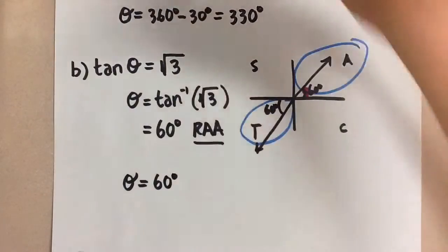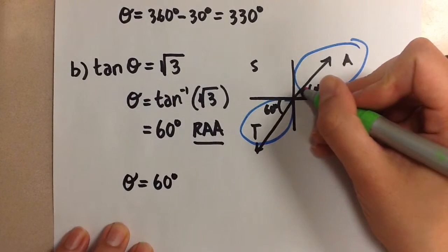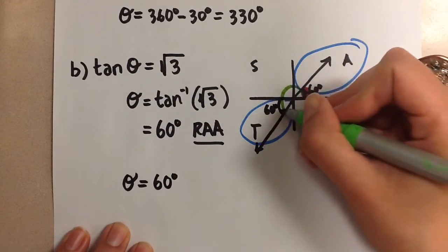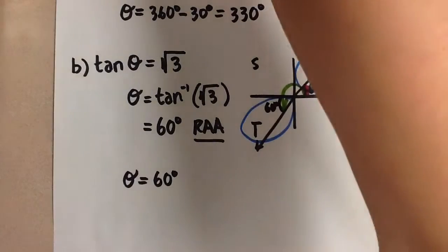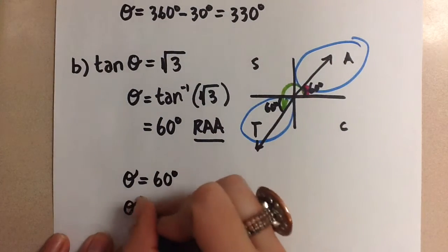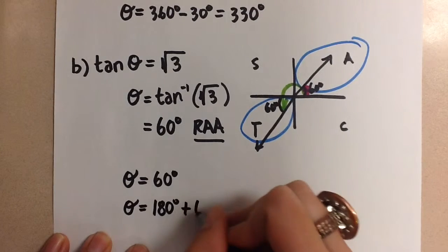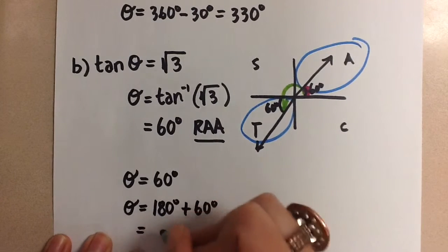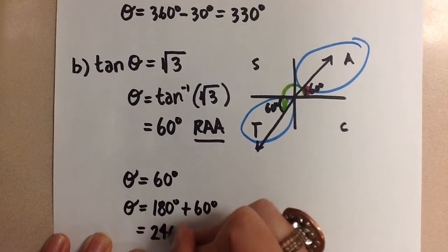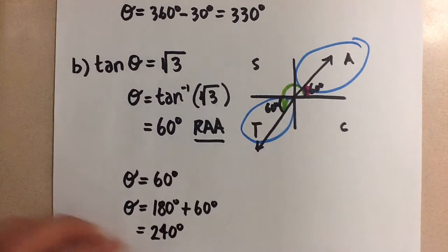And then the second theta is going to be from the positive x-axis around to this terminal arm. And we calculate that by doing 180 degrees plus 60 degrees. And so we get 240 degrees for the second value of theta.